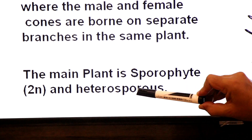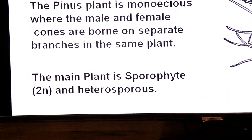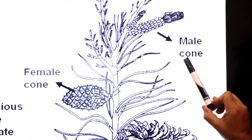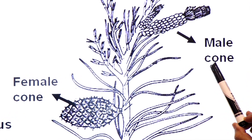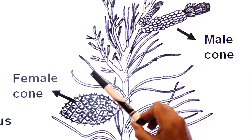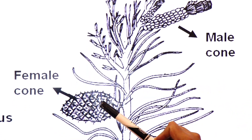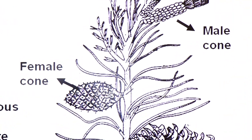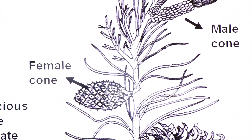Pinus is heterosporous — it generates microspores as well as megaspores. The male cone is the site for generation of microspores and the female cone is the site for generation of megaspores.